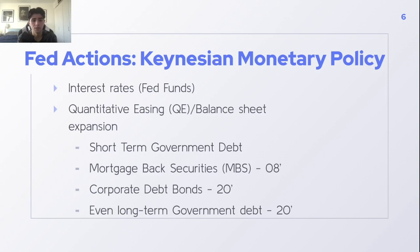The Fed has had to resort to significant quantitative easing or balance sheet expansion, which is essentially the Federal Reserve creating money to purchase financial assets. Those assets include short-term government debt bonds, mortgage-backed securities, corporate debt bonds, and longer-term debt bonds. As you can see here, these programs expand and only get bigger over time, which really brings into question how that money is being spent, where it's going, and what it's being used for.